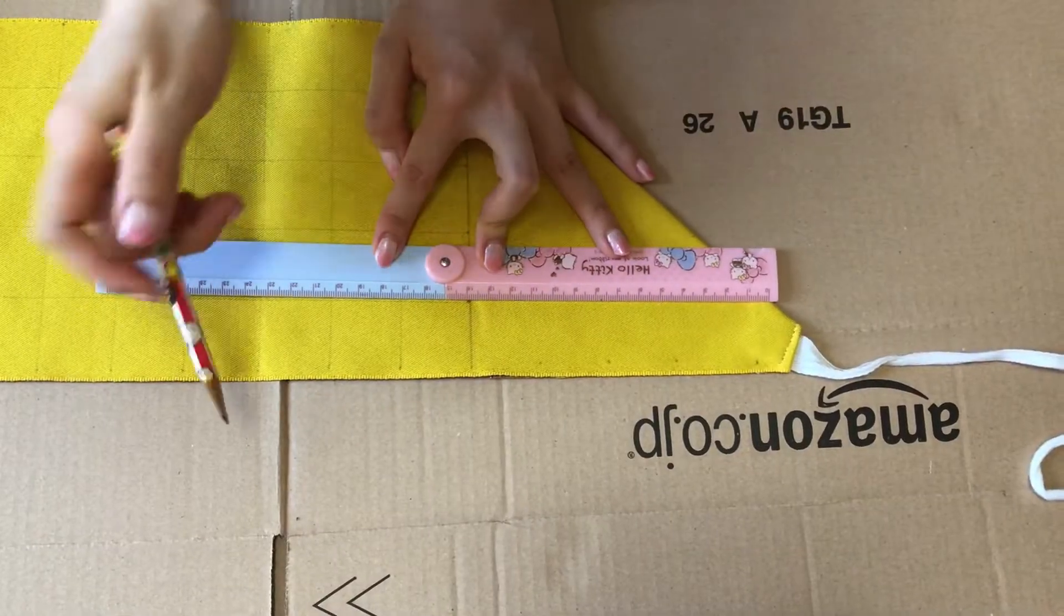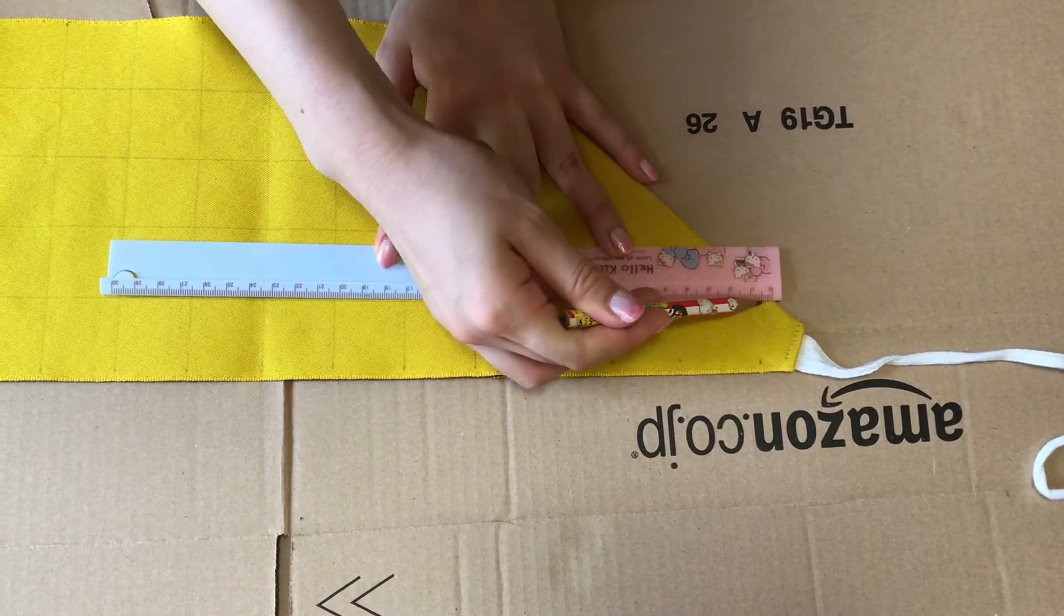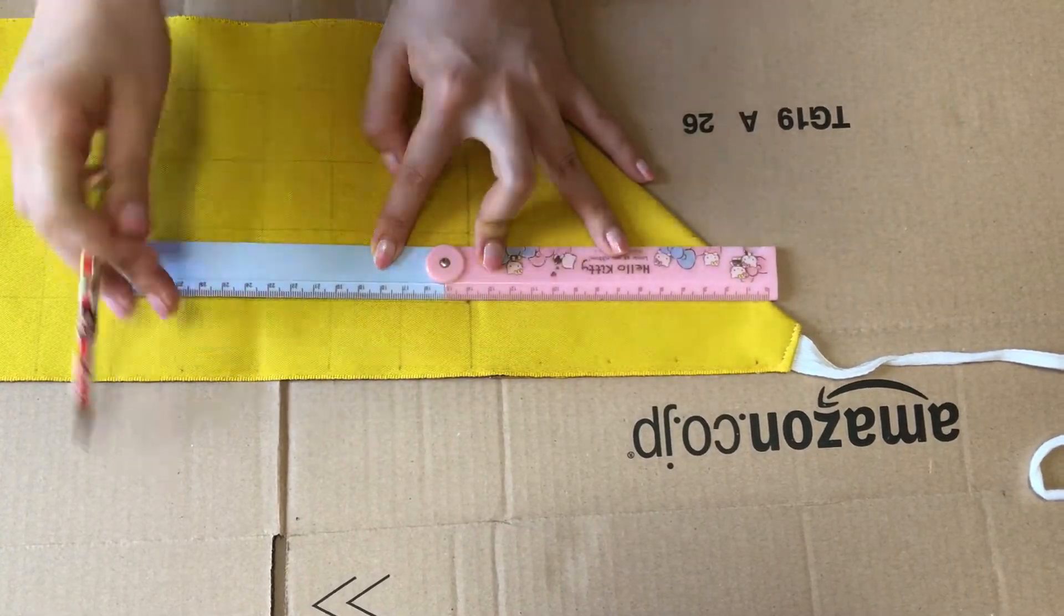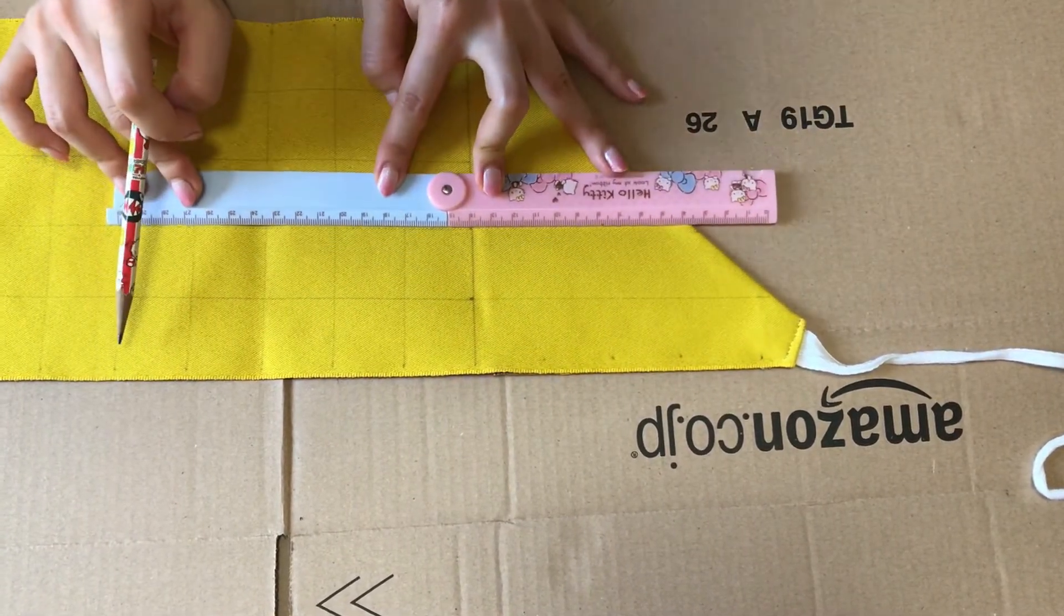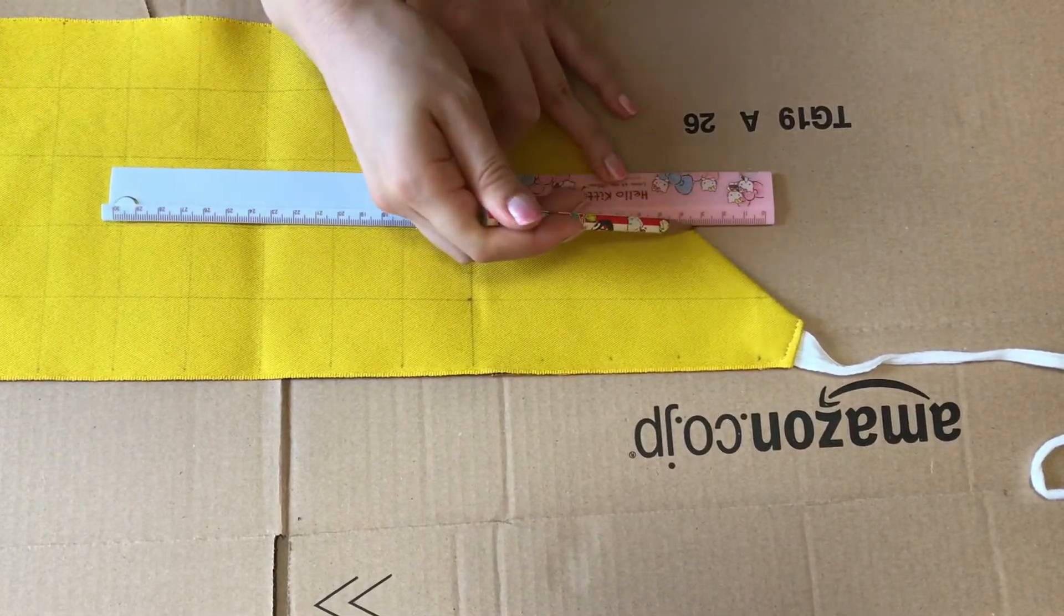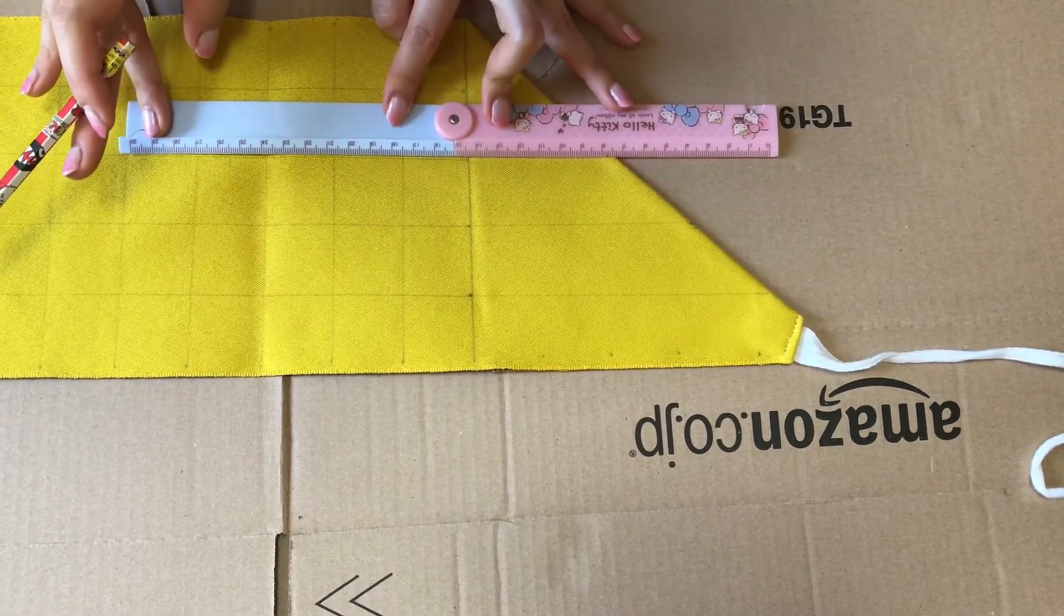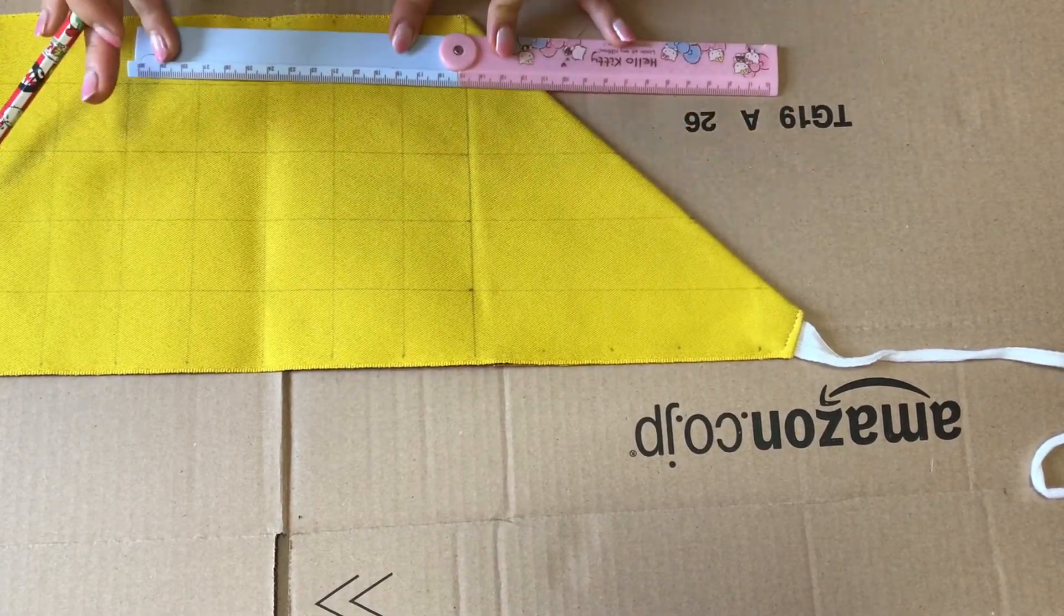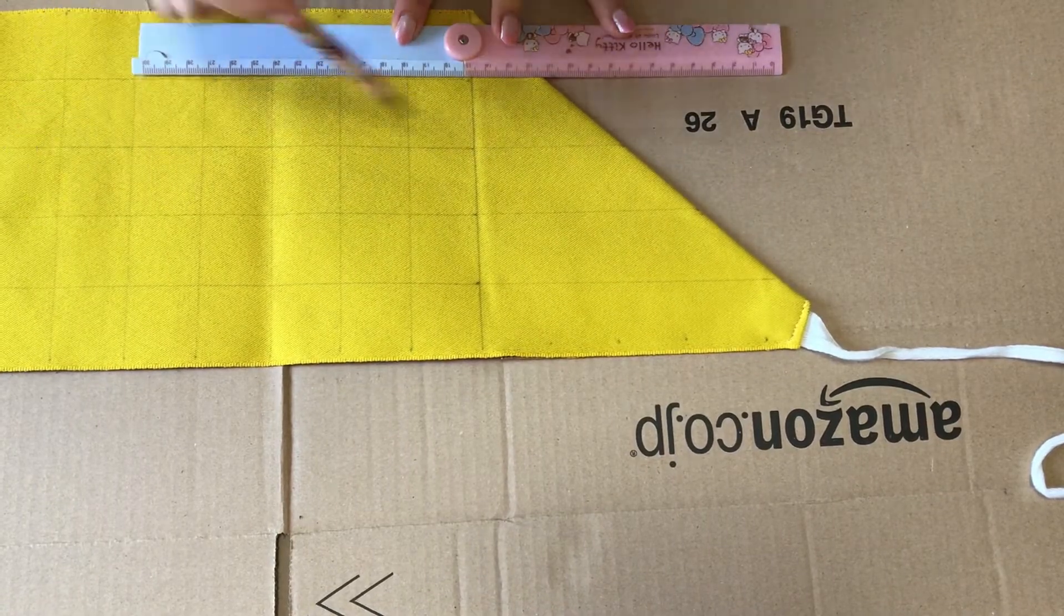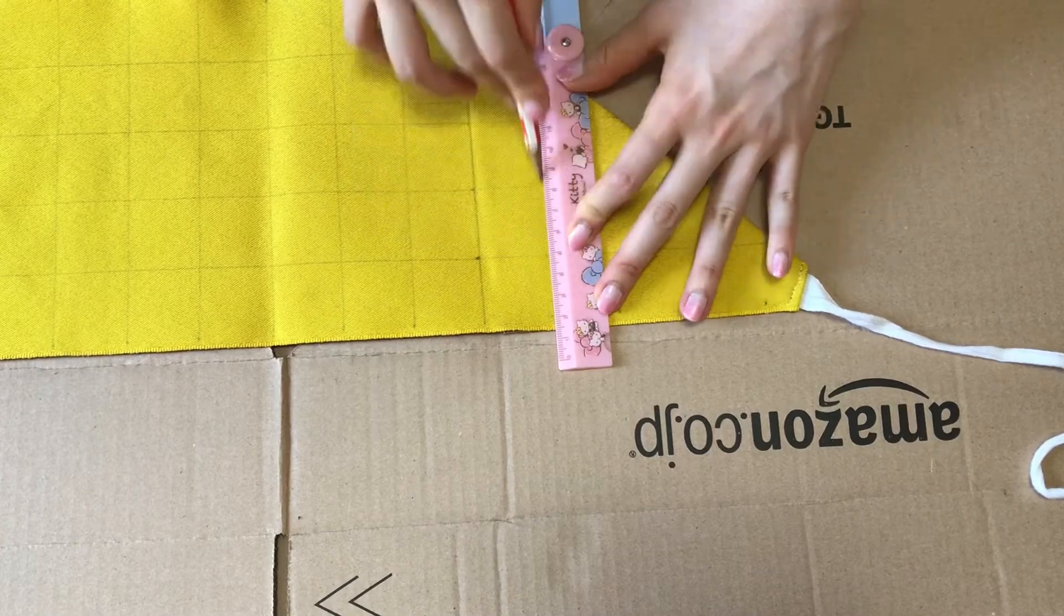The triangle part is difficult. So finally, I draw the draft here. Use this line. Draft is finished.